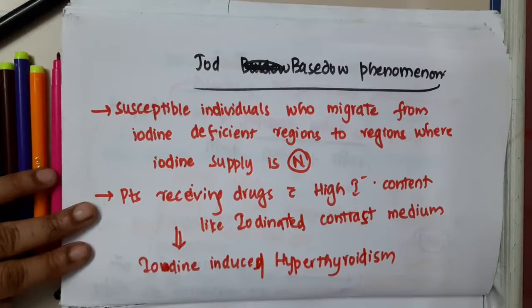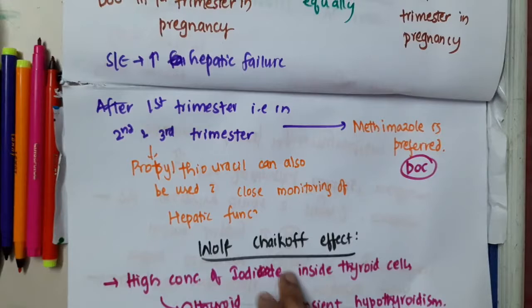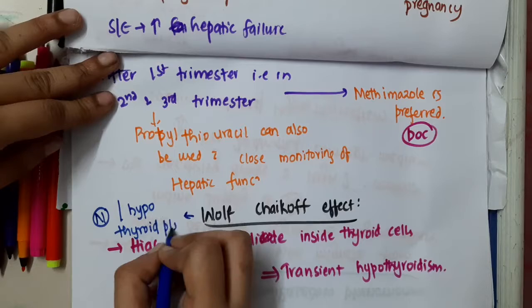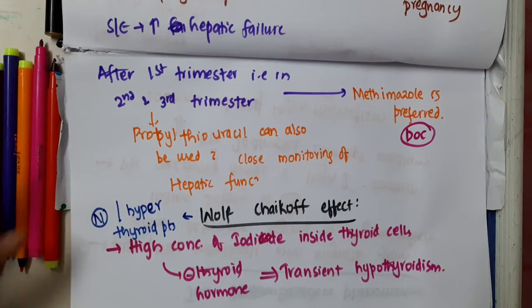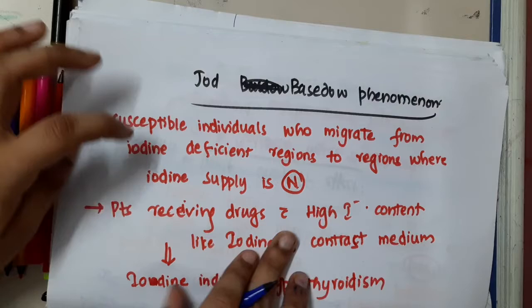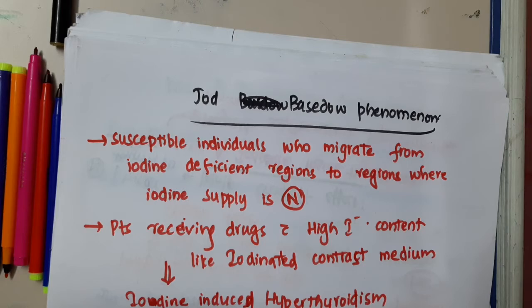Whereas iodine-induced hypothyroidism is Wolf Chekhov's effect. Wolf Chekhov's effect is seen in normal or hyperthyroid patients, whereas Jod-Beyesdow's phenomenon is seen in iodine-deficient individuals — and also in cases involving the use of contrast medium with high iodine content. This is about the Jod-Beyesdow's effect and Wolf Chekhov's effect.